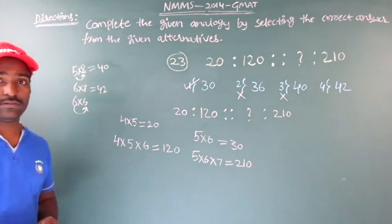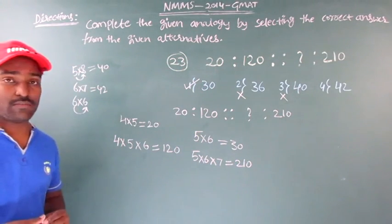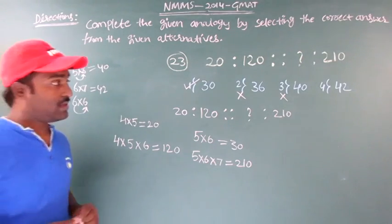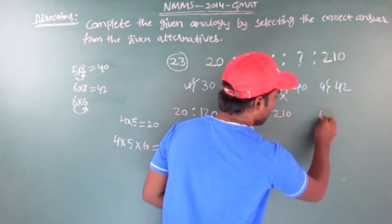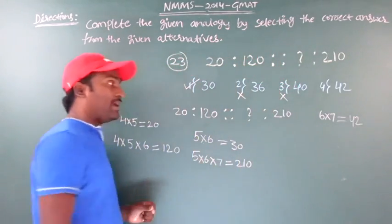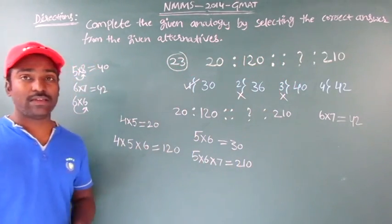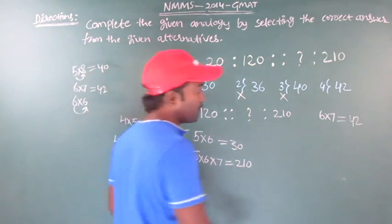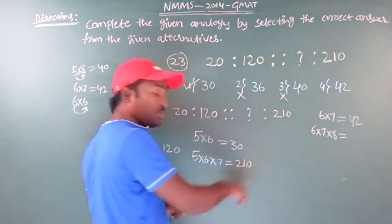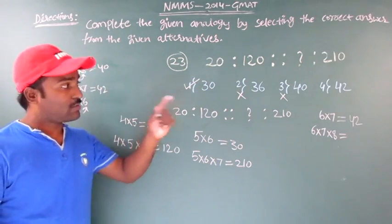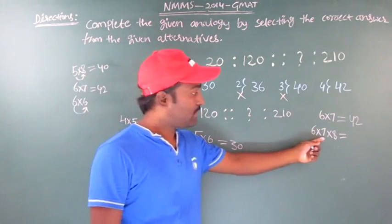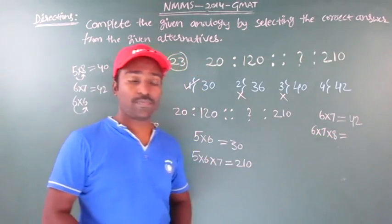Moving to the last option — the number 42. And 42 can be written by two consecutive numbers. If I multiply 6 into 7, I get 42. So with consecutive numbers 6 and 7, I get 42. Now, following the analogy, I need 6 into 7 into 8 to equal 210. Let's check: 6 into 7 is 42. What is 42 into 8?